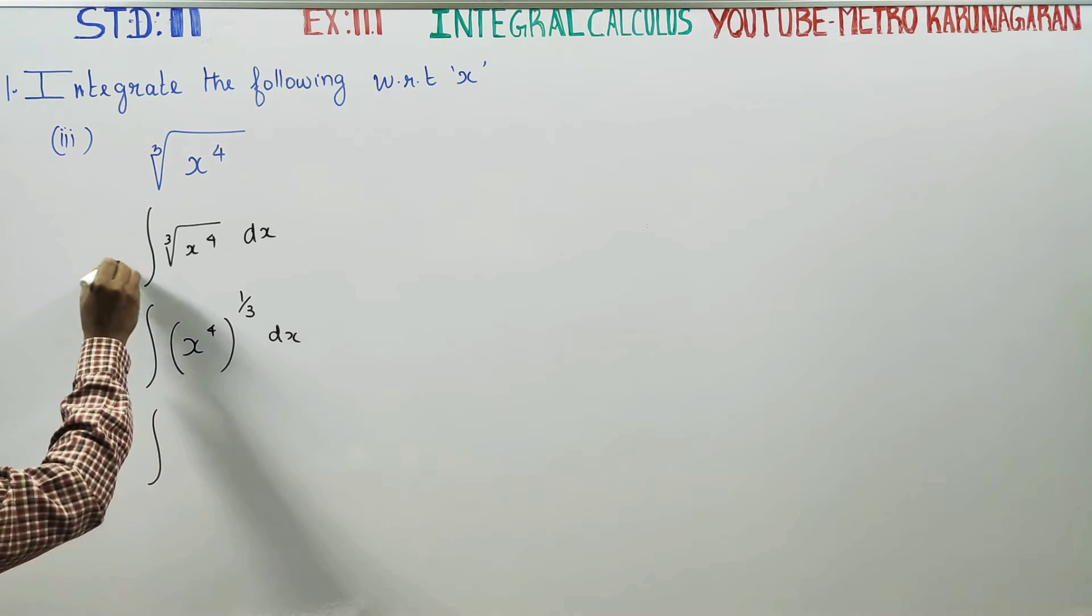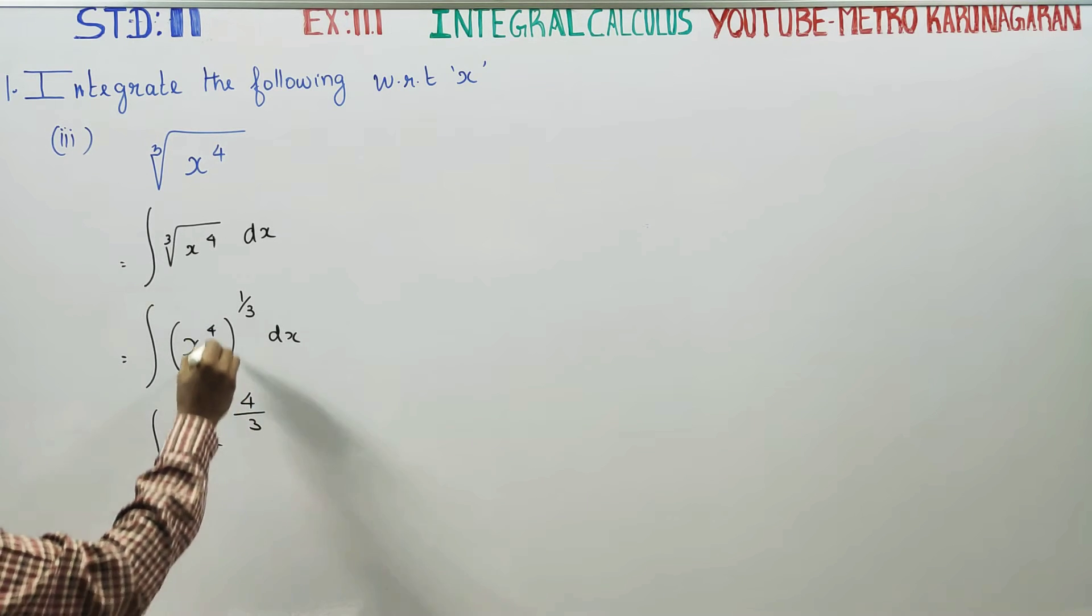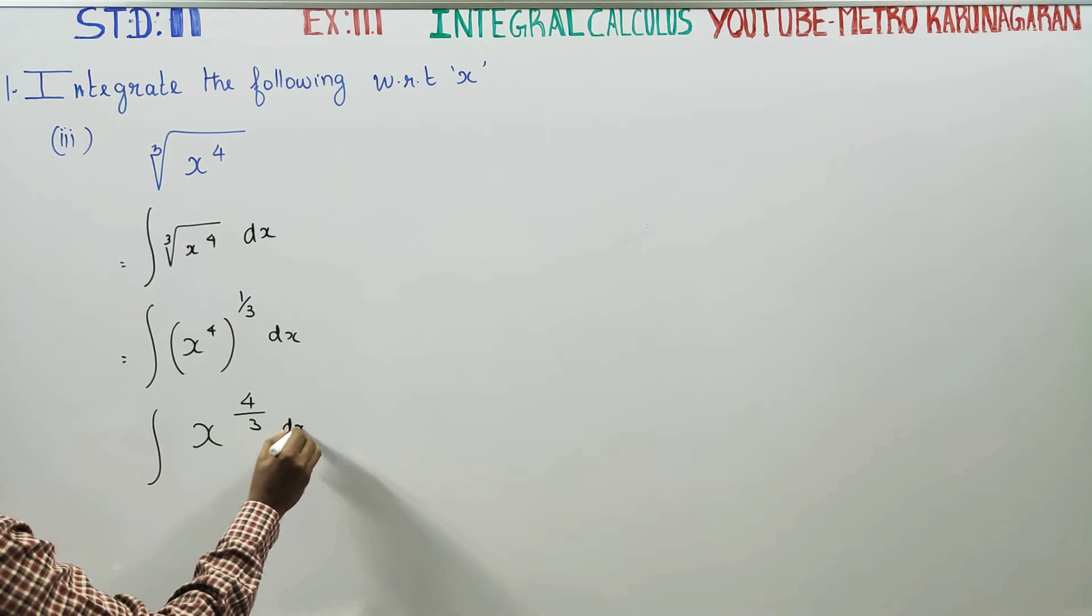Integration of power, it becomes 4 by 3. 4 into 1 by 3 is 4 by 3 dx.